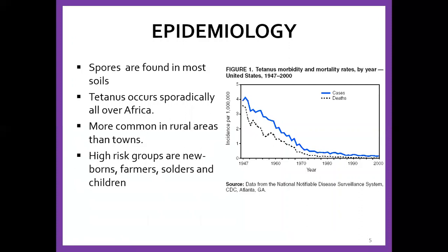In terms of pattern, over the years the cases of tetanus have declined drastically, which is why it's a disease that is not that common. These spores are mostly found in soil and can periodically be found all over Africa, but it's more common in rural areas than in towns. In towns, most areas are paved or cemented, so there's less encounter with soil. In rural environments with agriculture, the infrastructure is not that good, so the soil is all over and you'll find these cases in abundance.